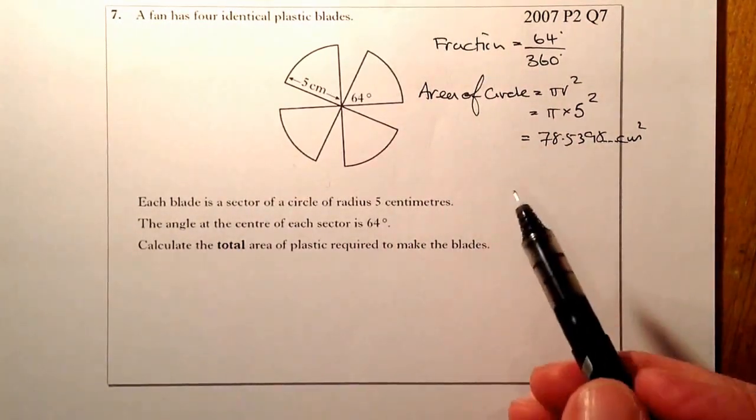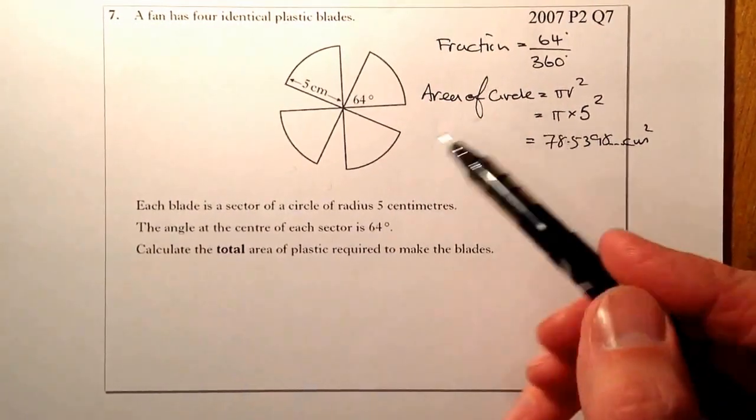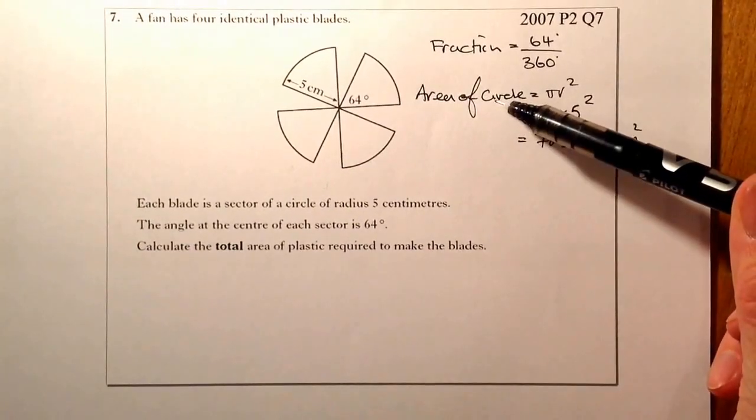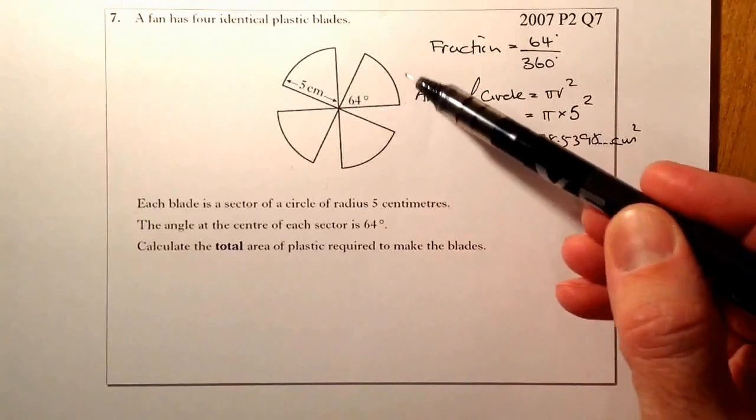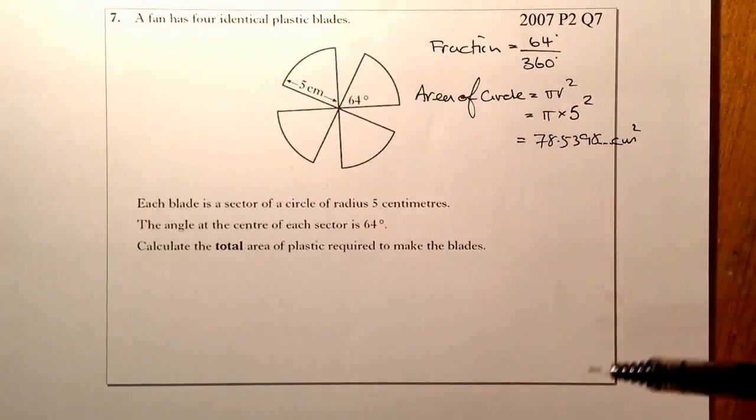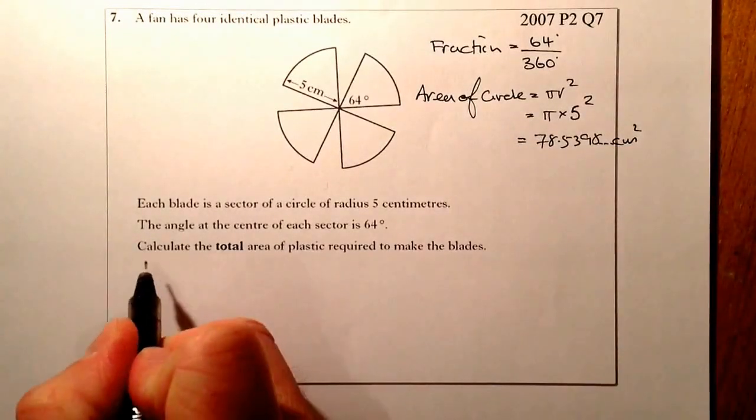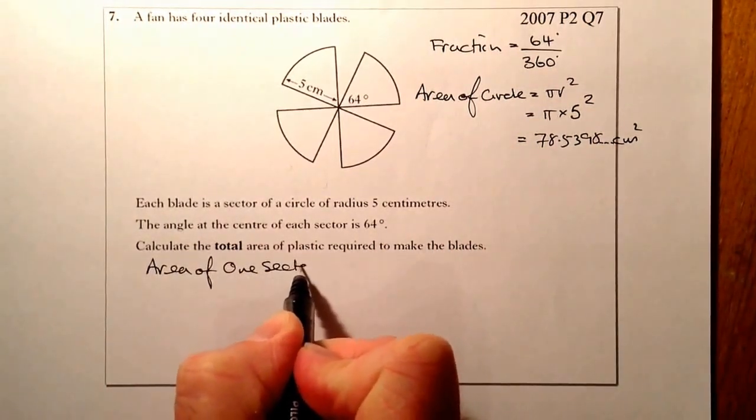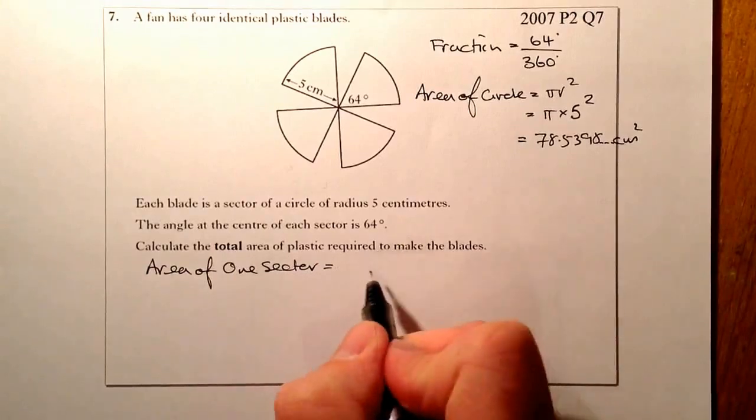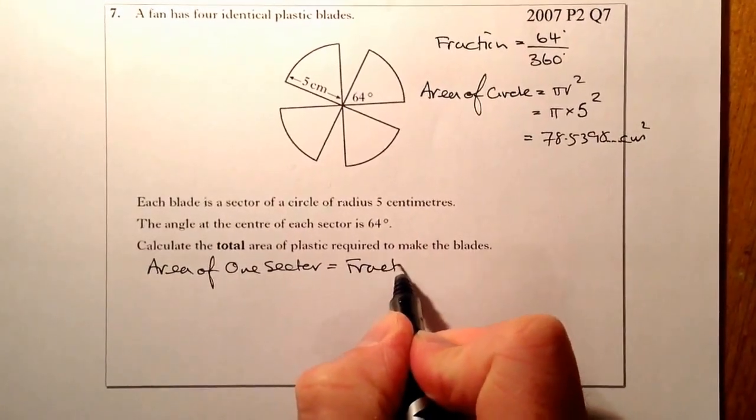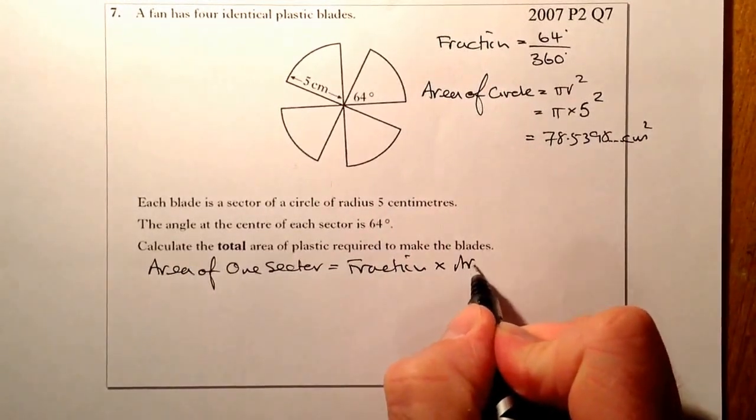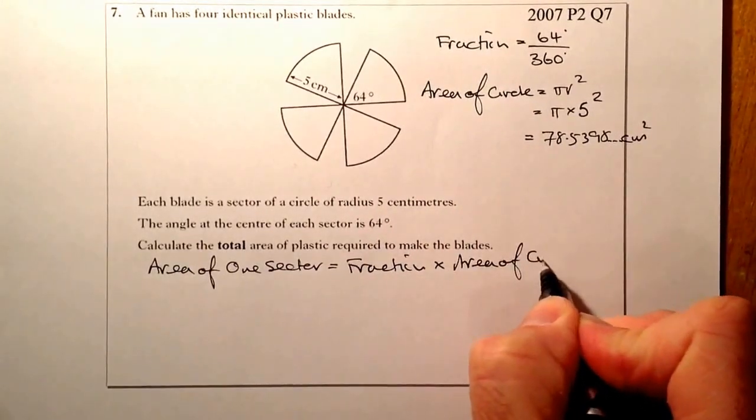Okay, from there I want to find the area of a sector. I've got the area of the circle and a fraction of the circle, which is one of the sectors. So the area of one sector is going to equal the fraction I've got above multiplied by the area of the circle.